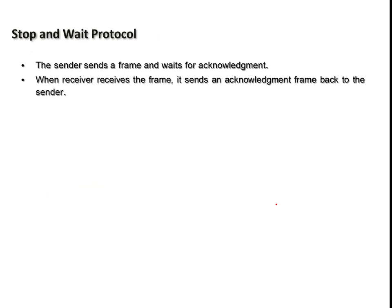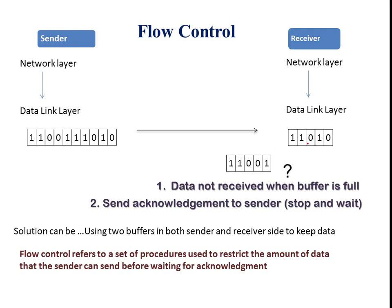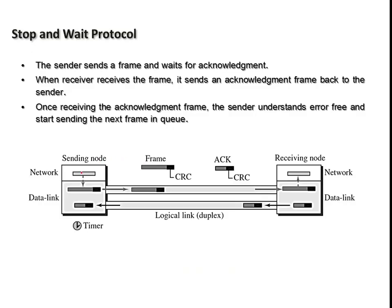Next is the stop-and-wait protocol, which is the set of rules we follow when there is an issue in flow and error in the collected data. Flow means if the buffer at the receiver side is overwhelmed, the sender must stop and wait until previously collected data are processed before sending the next data. In this protocol, the sender sends one frame at a time and waits for an acknowledgement from the receiver before sending the next.